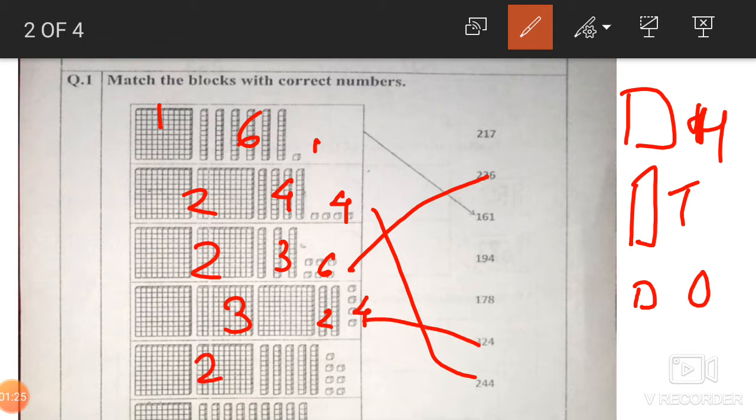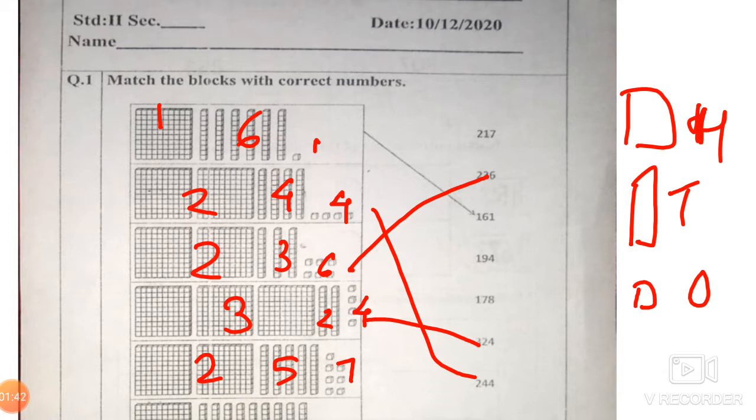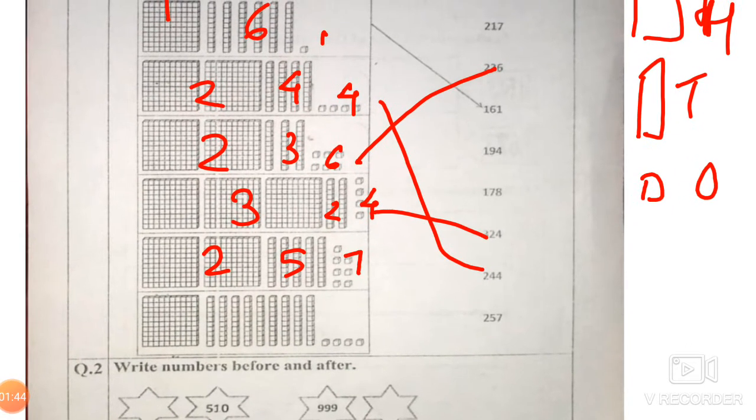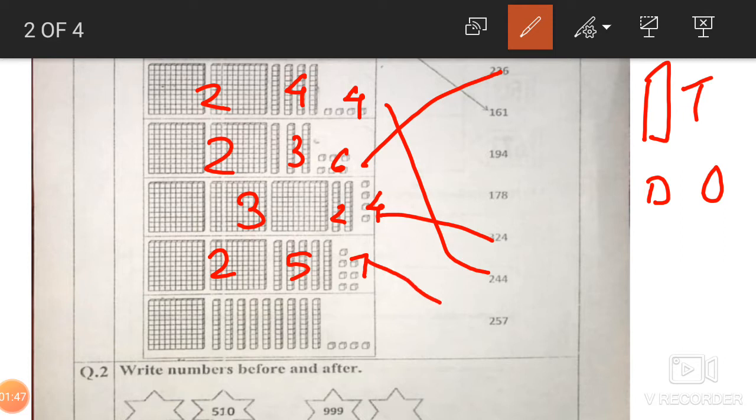Next, 2. Then 1, 2, 3, 4. This is 5. 1, 2, 3, 4, 5, 6, 7. So it is 257. Is the number down? Let me see 1 minute. Number must be down. Yes. 257 is here.